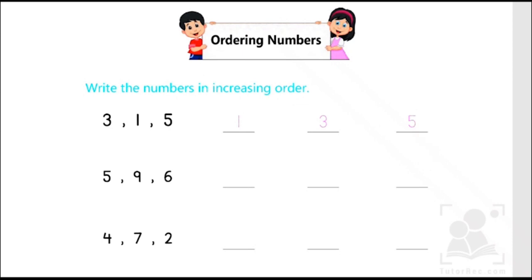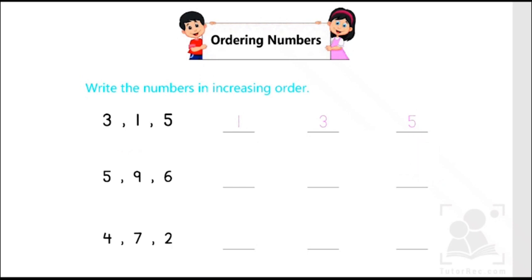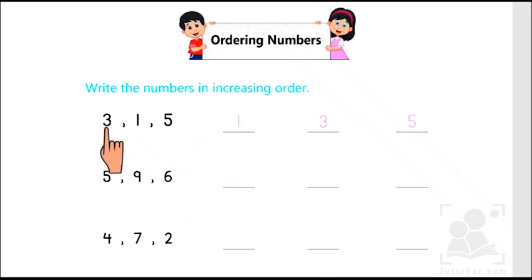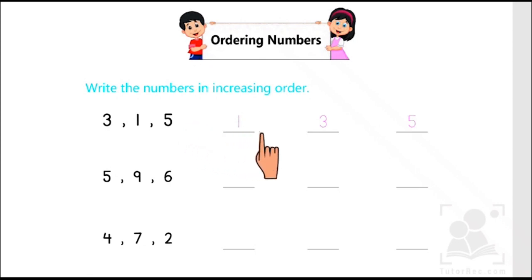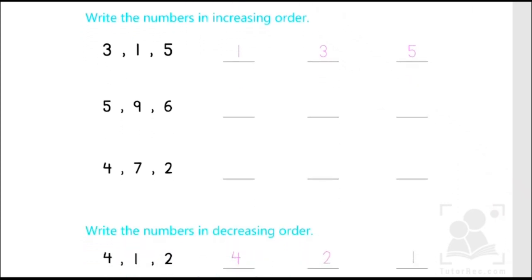We are given some numbers to put into a logical order. The first example has been done for us: 3, 1, 5. The increasing order starts from the lowest number amongst these three. The lowest one is 1, then the bigger one is 3, and the biggest one is 5. So increasing order means we start from the smallest, then greater, and then the greatest.